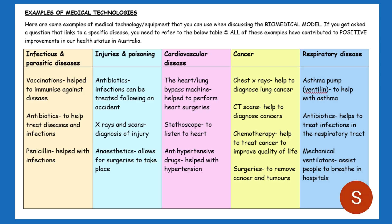This slide gives some examples of specific medical technologies, because medical technologies are examples of the biomedical approach to health across the five categories of disease. It's not limited to these examples, but this gives you a reference for exam questions. These are all positives — advancements in medical technology that have allowed the biomedical approach to be so successful and contribute to positive improvements in health status, particularly the reduction in mortality and increase in life expectancy. The key skill for this topic is to analyse the strengths and limitations of the biomedical model.